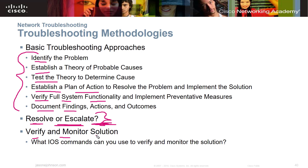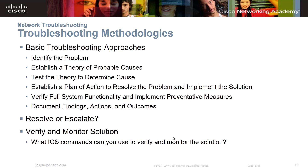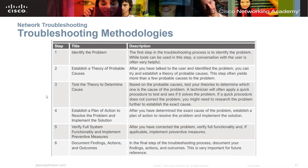When you verify and monitor solutions, if you put a solution in place, make sure it's going to work first — you don't want to cause more downtime or damage. Then verify it works and monitor it. Use your IOS show commands to confirm that the solution is working and things are connected properly. The six-step chart — identify, establish, test, establish a plan of action, verify functionality, implement preventative measures, and document — is a good framework to keep handy.